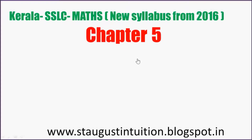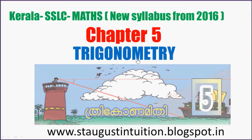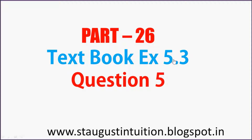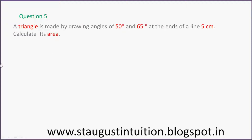Let's start with Trigonometry Chapter 5, Textbook Exercise 5.3, Part 26, Question Number 5. A triangle is made by drawing angles of 50 degrees and 65 degrees at the ends of a line 5 cm. Calculate its area.